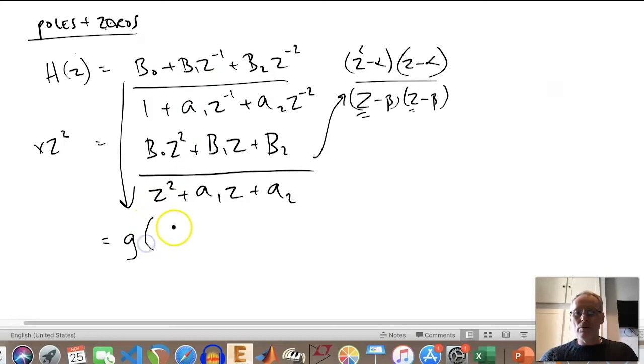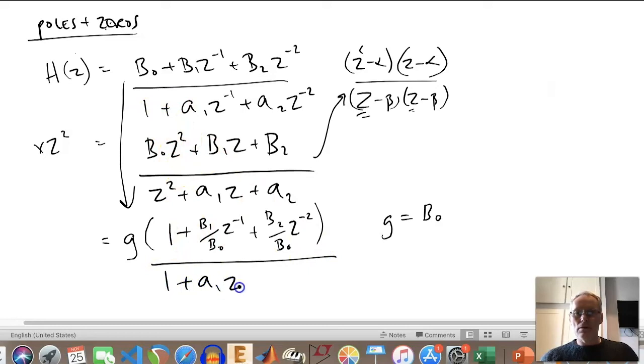If we rewrite this as follows, if we put 1 + ... if we said that g was equal to B₀, then g turns out it's going to be the same as that, but we have to then do B₁/g or B₁/B₀ times z⁻¹, and then same again here, B₂/B₀ times z⁻². This has already got the one, so we can just keep that. And then essentially these are constants here, B₁/B₀ and B₂/B₀.